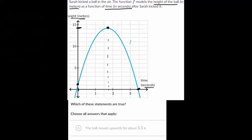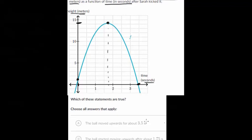So now we can answer the questions. And the first one, the ball moved upwards for about 3.5 seconds. So here's three and a half seconds. So if the ball kept going up and up and up, that would be true. But it's not true because at about 1.75 seconds, it starts moving downward. So that one's not right.